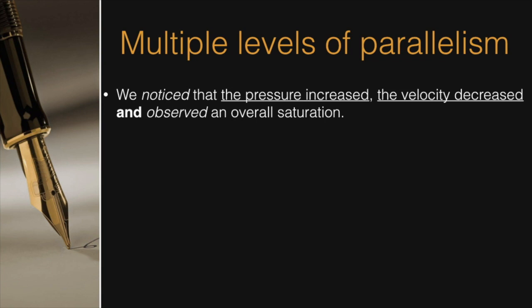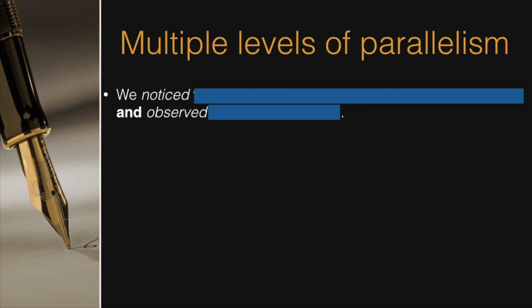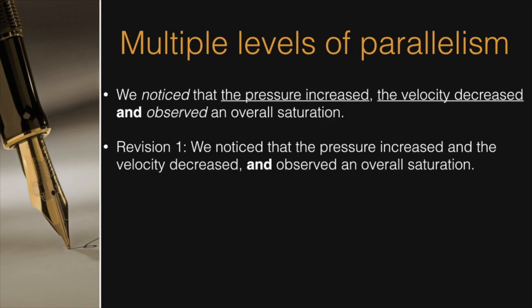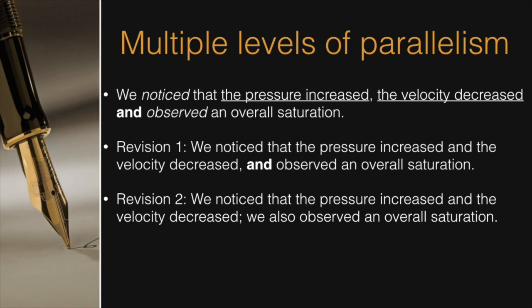Instead, noticed and observed are in parallel with each other. As in, we noticed something and observed something. We can clarify that as in revision one. We noticed that the pressure increased and the velocity decreased, and observed an overall saturation. Notice now we use and twice in the sentence. However, multiple ands can look inelegant. So we can separate the third idea with a semicolon. So we revise. We noticed that the pressure increased and the velocity decreased. We also observed an overall saturation.